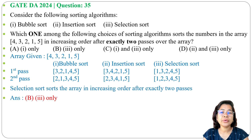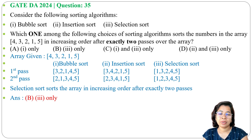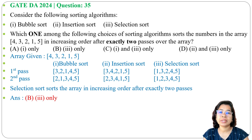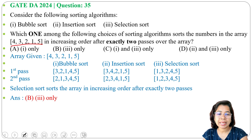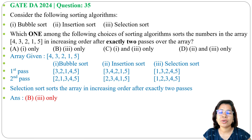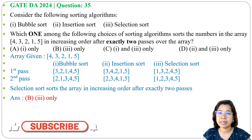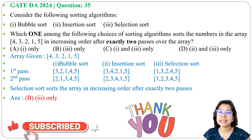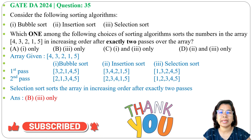After exactly 2 passes, selection sort has sorted the array, so the answer is selection sort — option B. Although bubble sort and selection sort both have running time of Θ(n²), and insertion sort has best case Θ(n) and worst case Θ(n²), for this particular example selection sort sorts the array in just 2 passes. If this lecture was helpful, please like, share, and subscribe. Thank you.